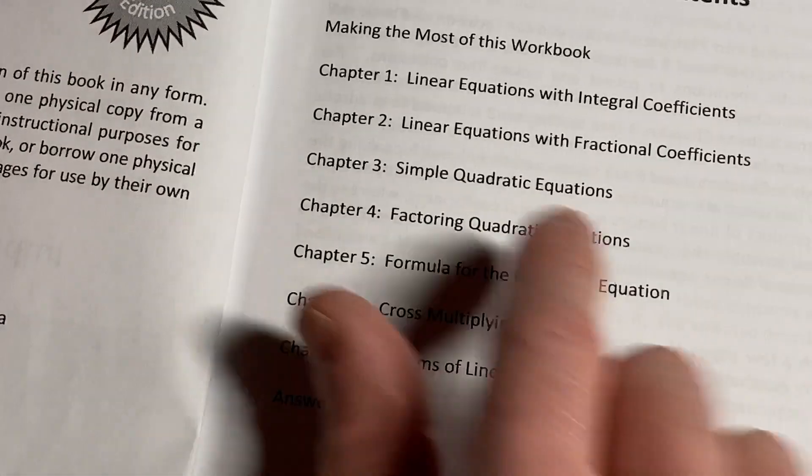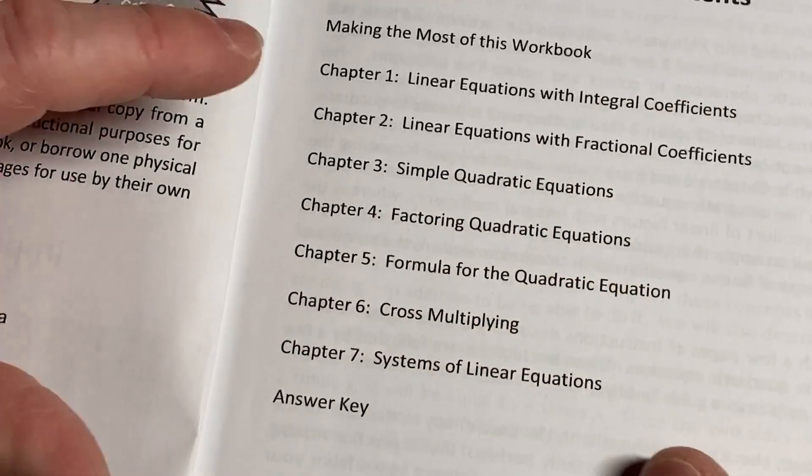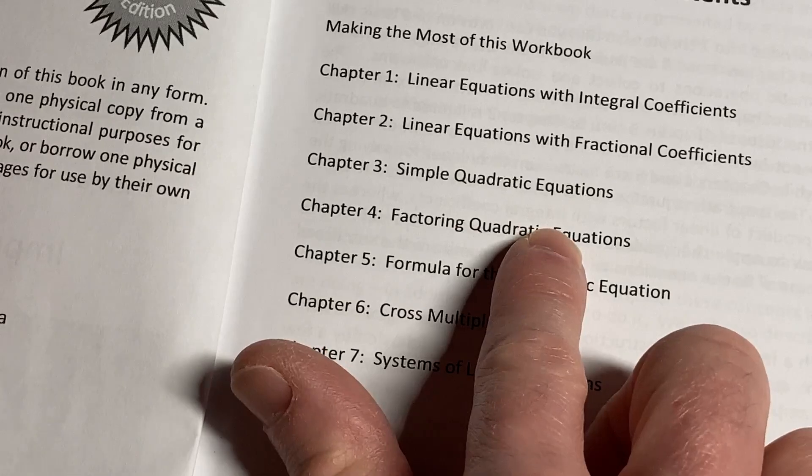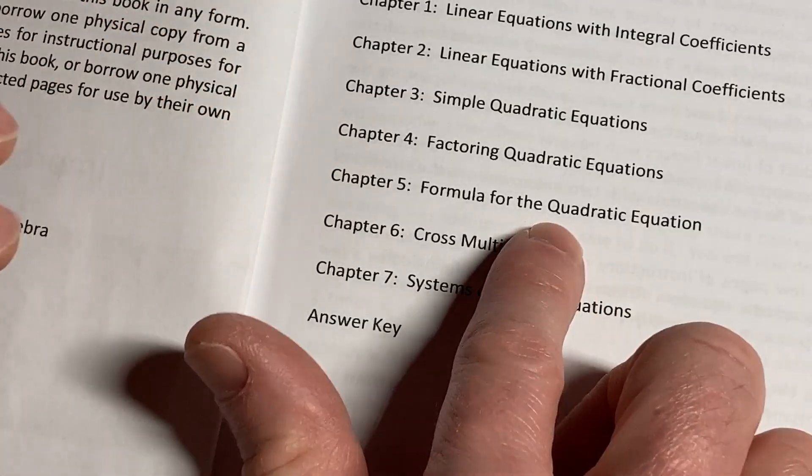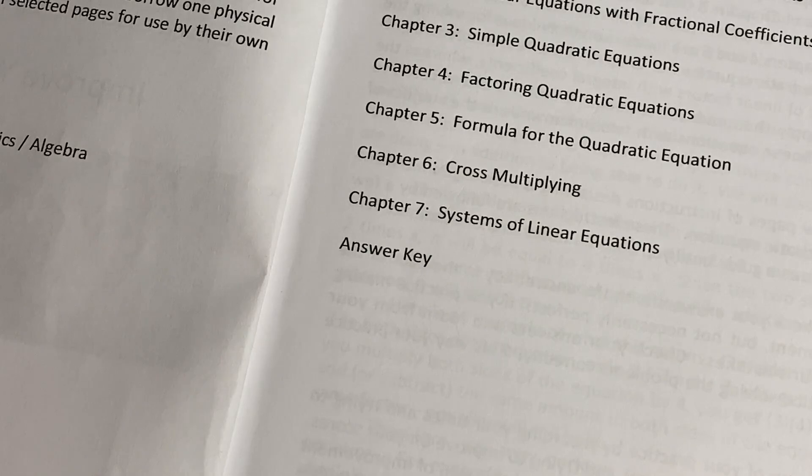So linear equations with integral coefficients, that basically means that the coefficients are whole numbers. You're not going to get fractions and then here we have linear equations with fractional coefficients, simple quadratic equations, and then factoring quadratic equations, formula for the quadratic equation, cross-multiplying systems of linear equations.